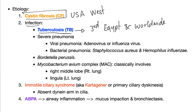So if you have a patient with bronchiectasis in Egypt, play the odds — the most common cause is TB. If you're in the United States with a patient with bronchiectasis, play the odds — the most common cause is cystic fibrosis.